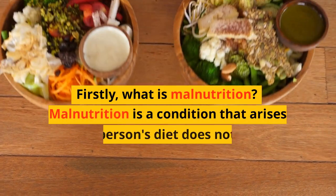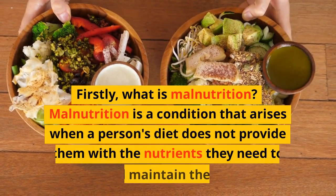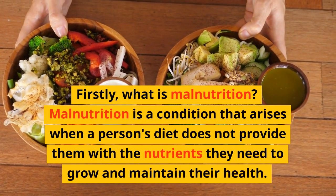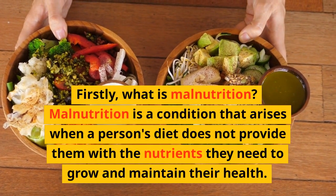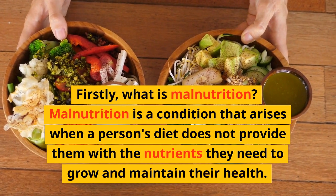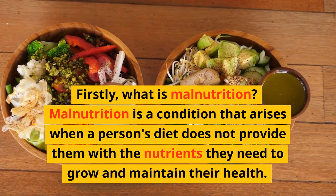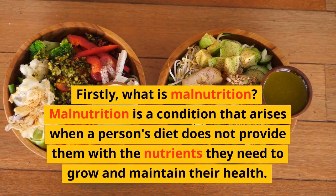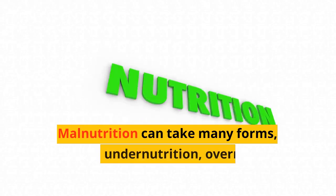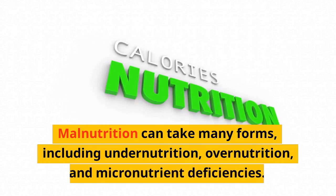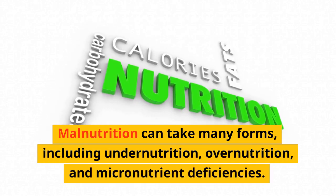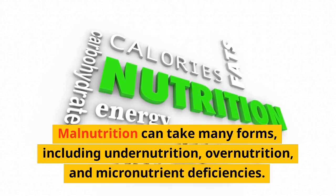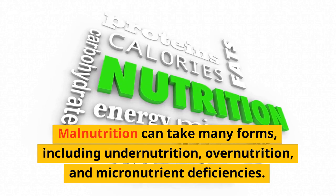Firstly, what is malnutrition? Malnutrition is a condition that arises when a person's diet does not provide them with the nutrients they need to grow and maintain their health. Malnutrition can take many forms, including undernutrition, overnutrition, and micronutrient deficiencies.